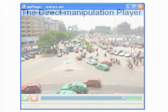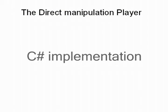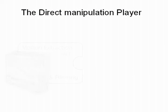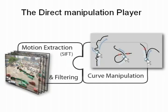We implemented Dimpy using the C-sharp language. Its implementation involved the combination of two main components: a motion extraction and filtering component that populates each video frame with motion curves, and a curve manipulation component that translates a pointer's 2D motions into a location on a motion curve, which in turn corresponds to a particular frame in the video.